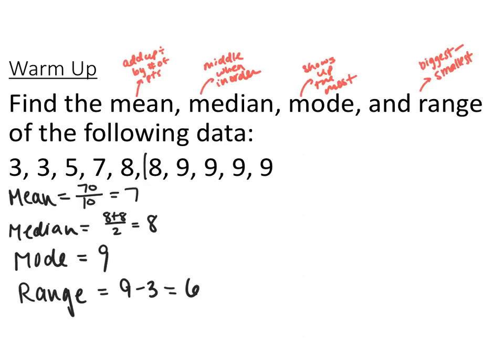For review: mean — you add up all your numbers and divide by how many total data points there are. Median — when you write them in order from smallest to biggest, it's your middle number. If there's an even number, then you take the average of the two middle numbers. Mode is the one that shows up the most, and this is the only one there can be more than one of. Range is your biggest number minus your smallest number.